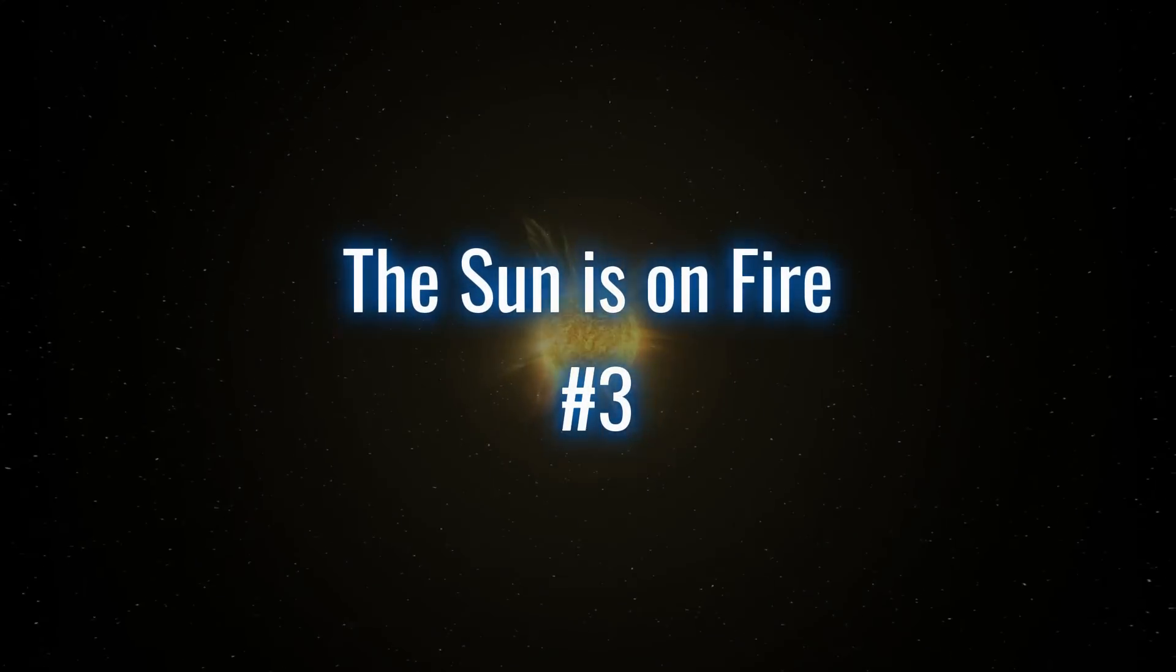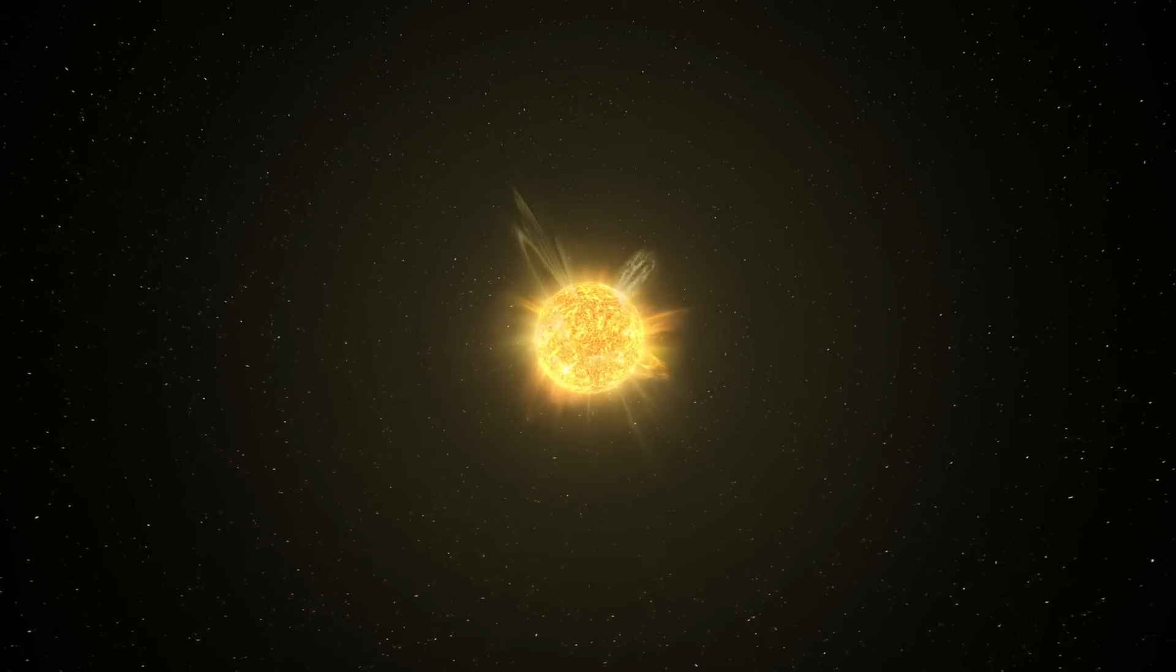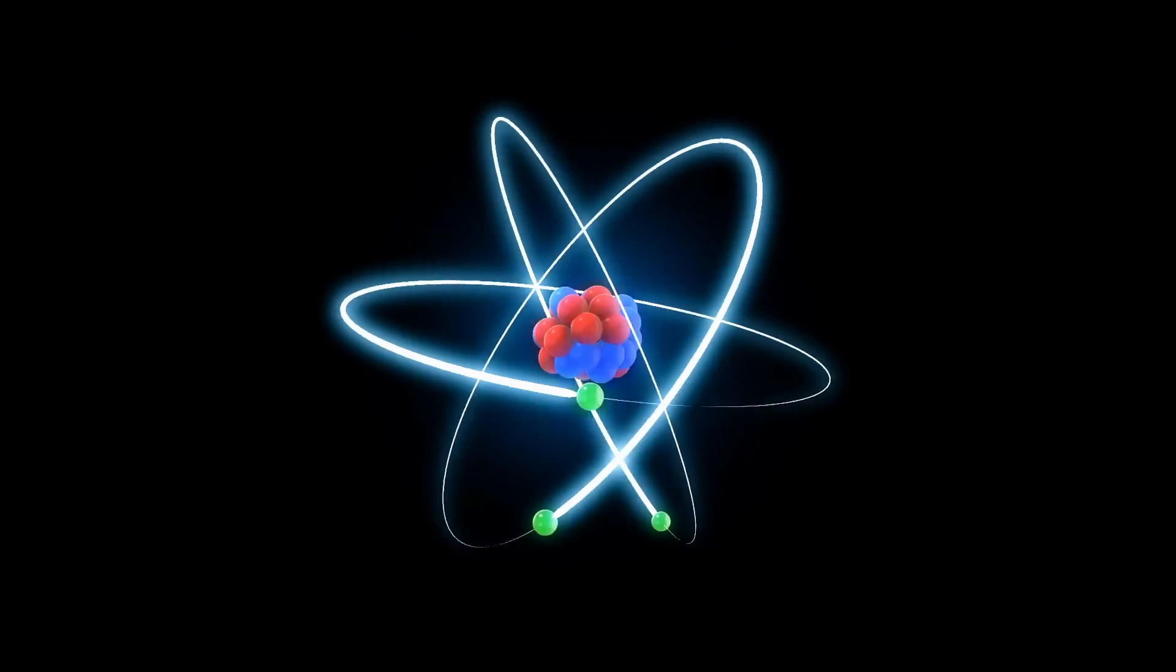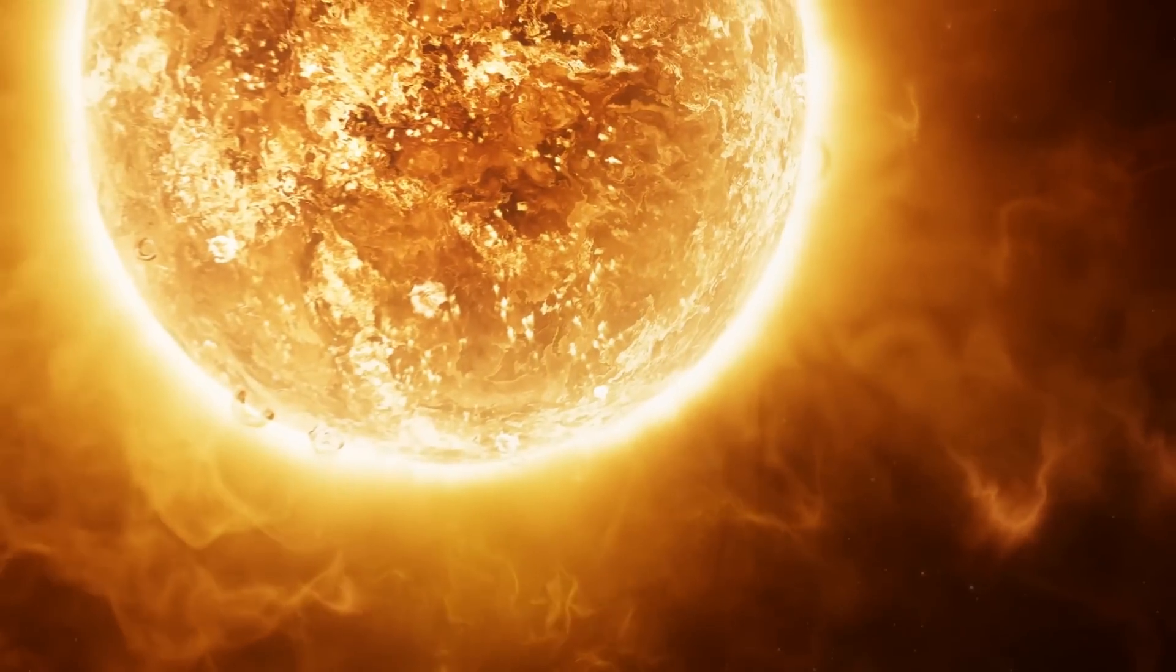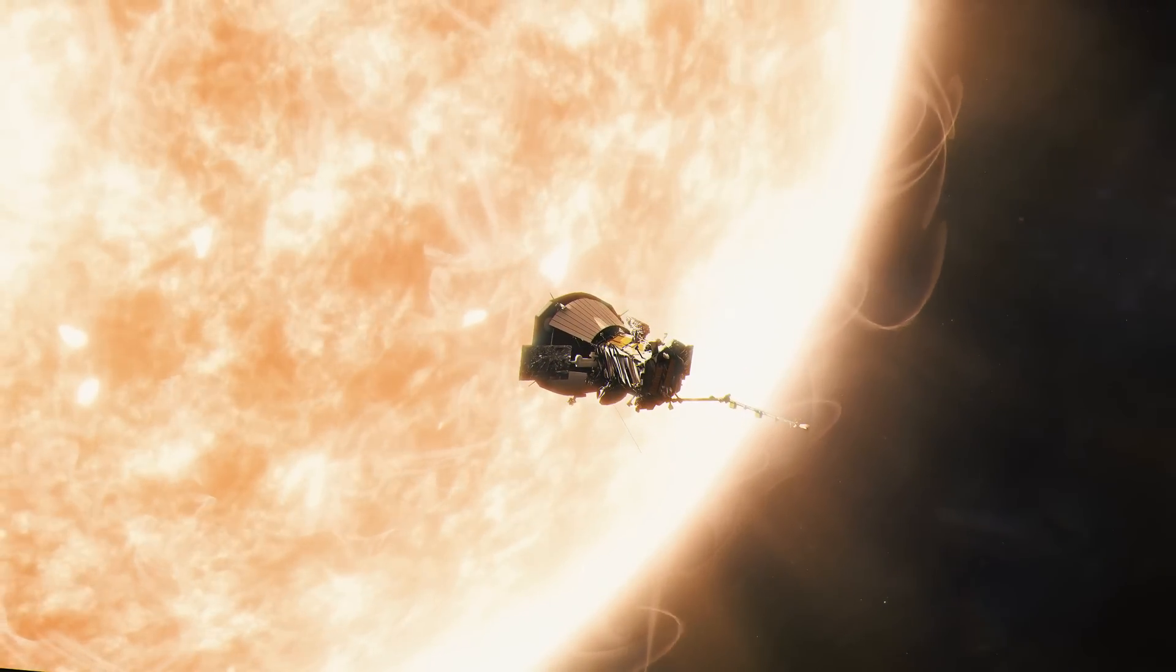3. The sun is on fire. Speaking of fire, it's not burning like a giant campfire. Fire needs oxygen. Instead, the sun is powered by nuclear fusion, smashing hydrogen into helium at its core and releasing mind-blowing amounts of energy. So, no flames, just pure atomic power.